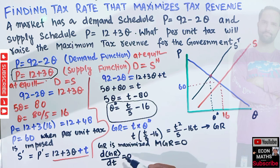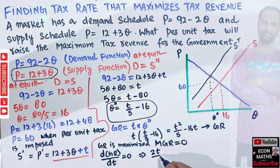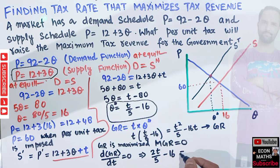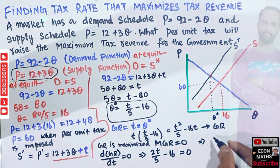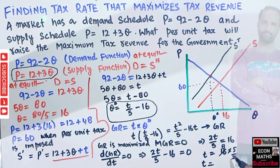The condition for maximization: d/dt (t²/5 - 16t) = 2t/5 - 16 = 0. This gives 2t/5 = 16, so t = 16 × (5/2) = 40. The tax rate that maximizes the government's tax revenue is t = 40.